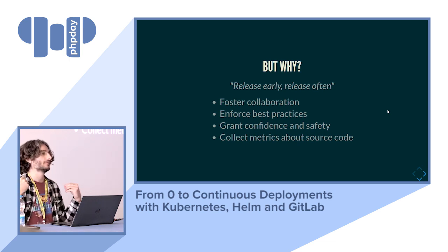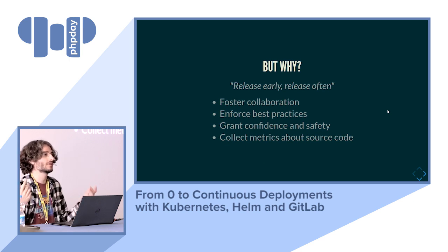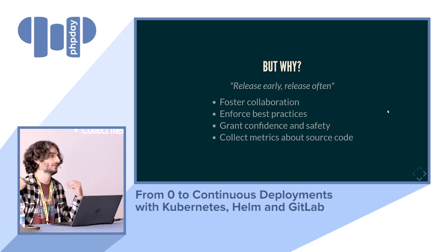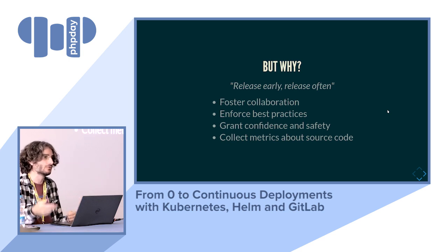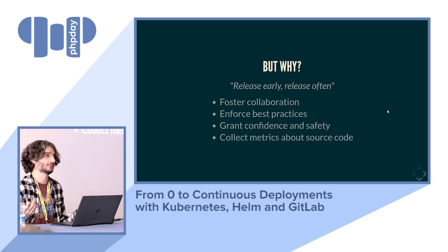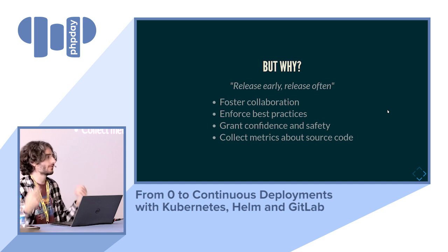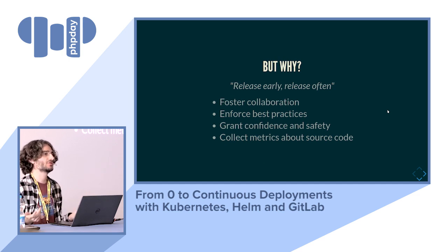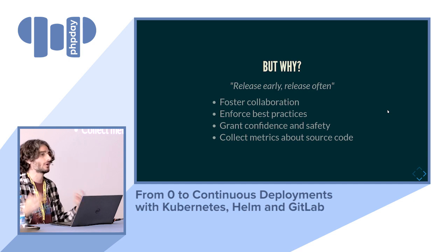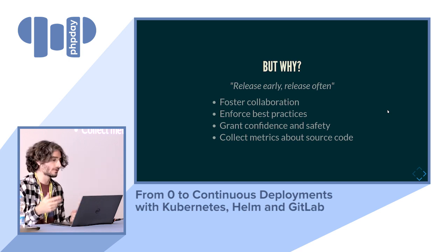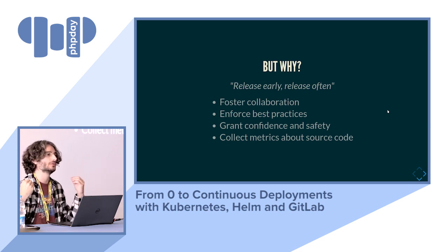This grants confidence and a sense of safety to the entire team. Everybody will be happy to tinker with stuff, perform changes, not be afraid to refactor, because the CI pipeline acts as a safety net protecting you from mistakes. Finally, you can collect data and metrics about your development process — track code coverage, number of merge requests per day, lines of code written, bugs fixed — and all of this empowers your team to deliver more value, more quickly.